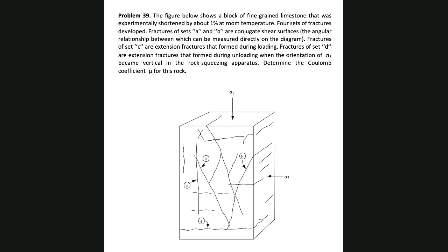As I was explaining, you have four different types of fractures here, shown as A, B, C, and D. A and B are conjugate fractures. C is extension fractures, and D is releasing fractures — what you see are opening fractures. We are looking at different types of fractures, and the question is asking what is the Coulomb coefficient of this rock.